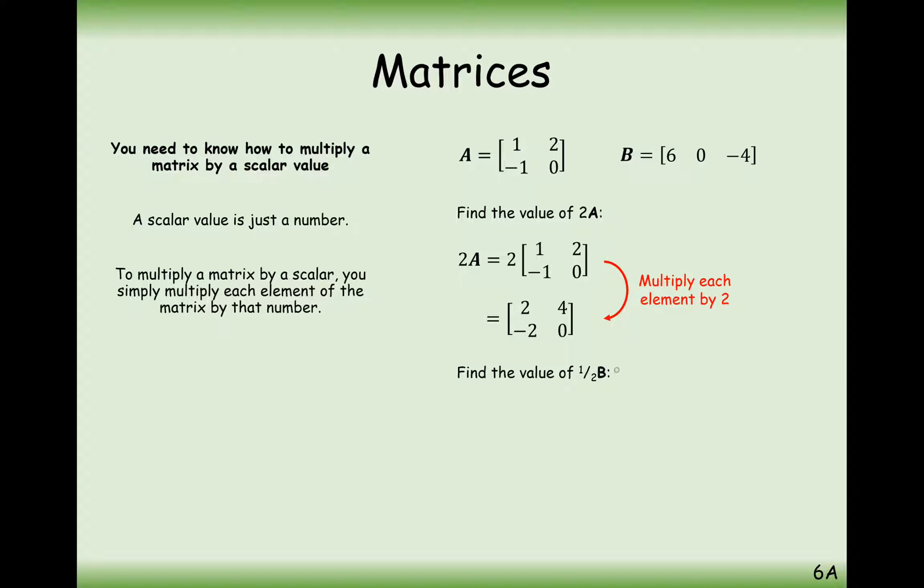You can also half all of the values inside a matrix by working out what a half of the matrix is, half B in this case. So half all of the cells inside the matrix, and we get 3, 0, minus 2. So you can double matrices, triple matrices, half matrices, take a third of a matrix, etc. In the next video, we're going to look at how we multiply two matrices together.